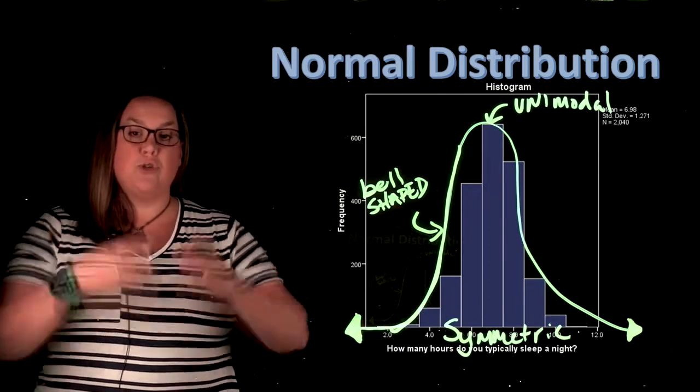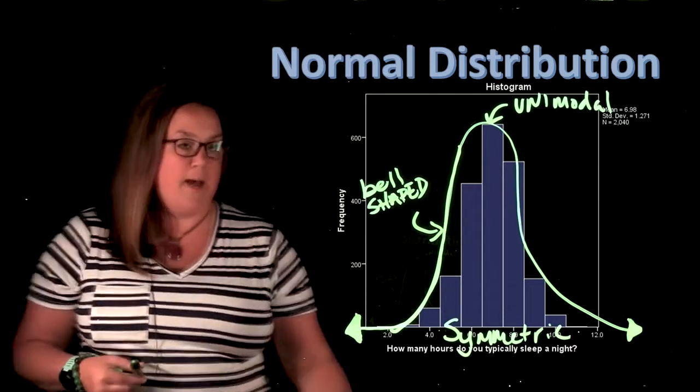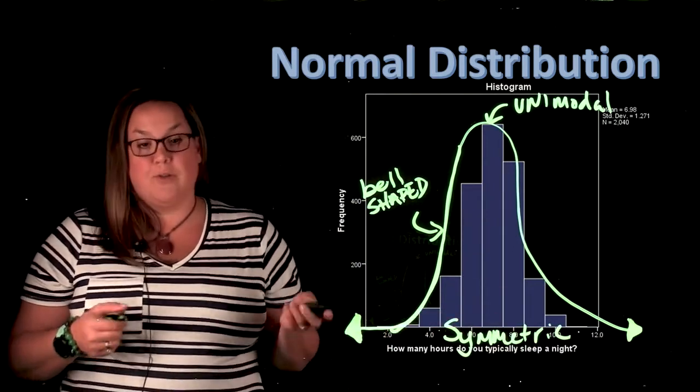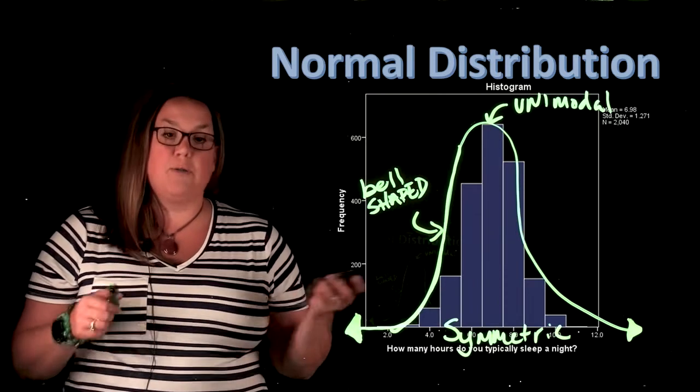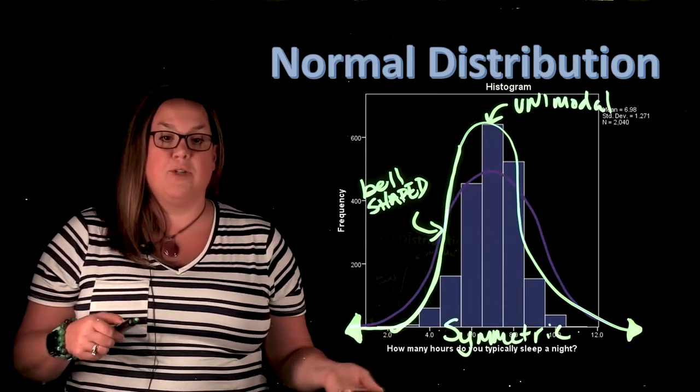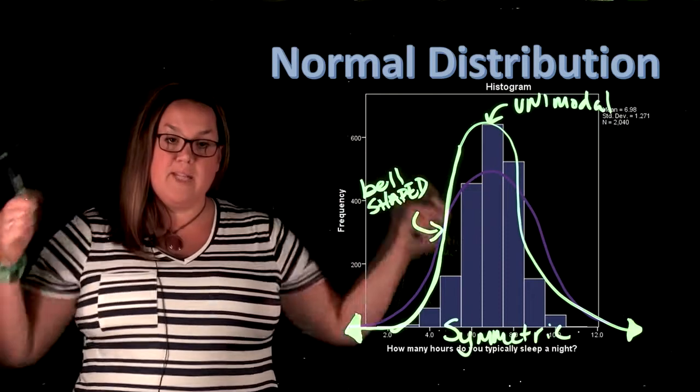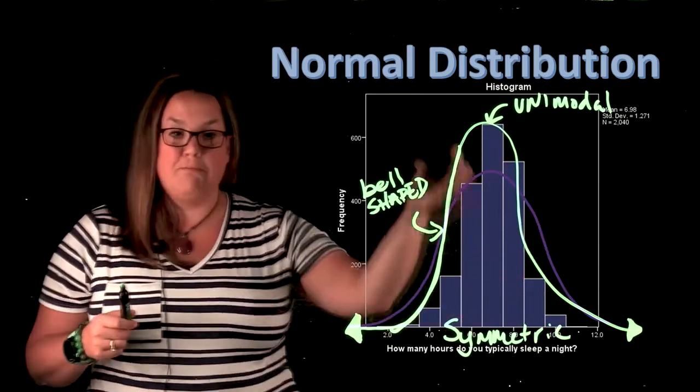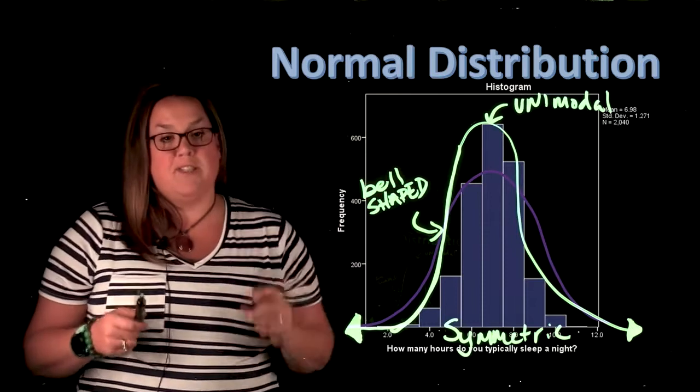But the normal distribution itself has that infinity upper and lower bound. So negative infinity for the lower bound, positive infinity for the upper bound, but always data that we say that's normally distributed will have that shape to it, that nice bell-shaped unimodal symmetric curve.